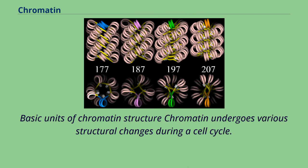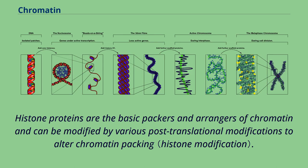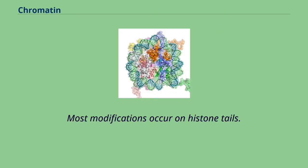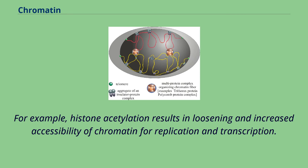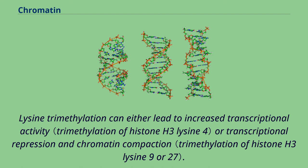Chromatin undergoes various structural changes during a cell cycle. Histone proteins are the basic packers and arrangers of chromatin and can be modified by various post-translational modifications to alter chromatin packing. Most modifications occur on histone tails. The consequences in terms of chromatin accessibility and compaction depend both on the modified amino acid and the type of modification. For example, histone acetylation results in loosening and increased accessibility of chromatin for replication and transcription.